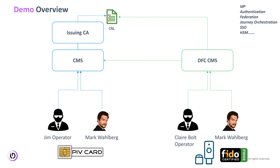There is a PIV card issuer — I'm calling it, for example, CMS — which is talking to an issuing CA, just like if you take the example of US Access FPKI that publishes CRL. On this system you'll see a name, Jim Operator, who is acting as the operator and security officer. Mark Wahlberg is the user that has a PIV card and will get a FIDO derived credential from the second system, which is the derived FIDO credential — the DFC CMS. And Clara is the operator on that system who'll perform some lifecycle operations.